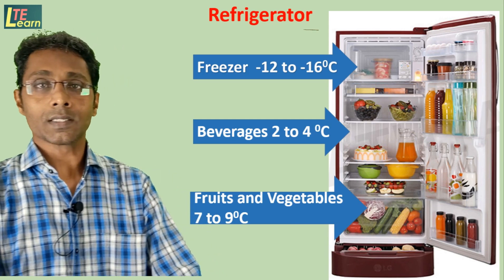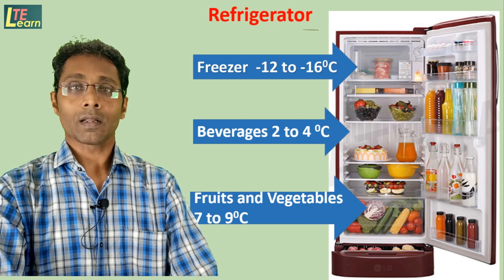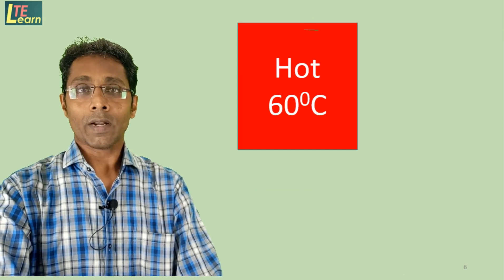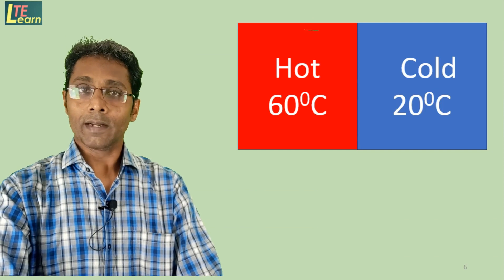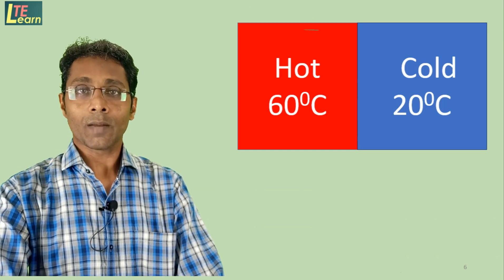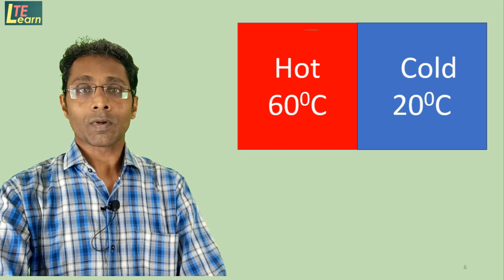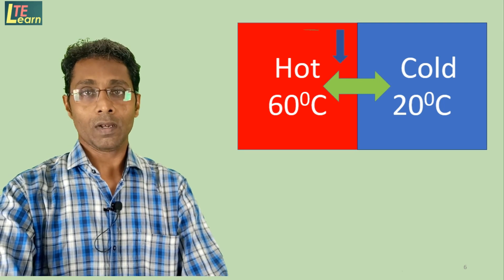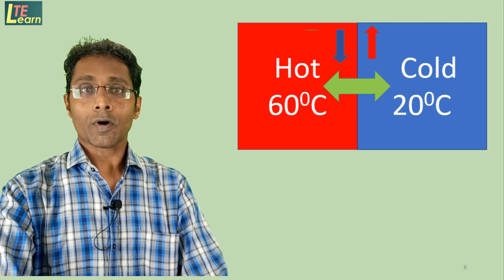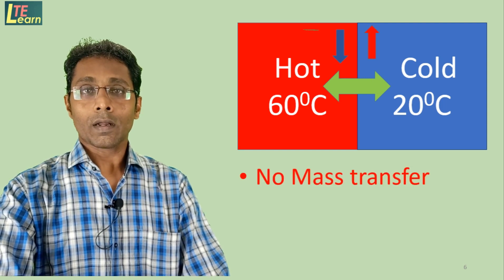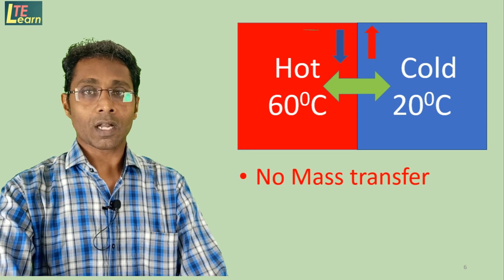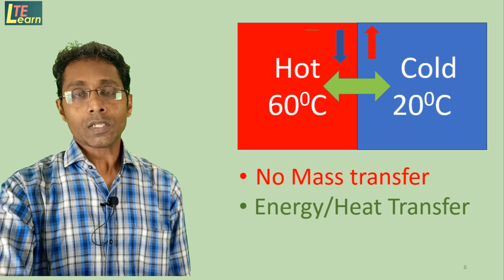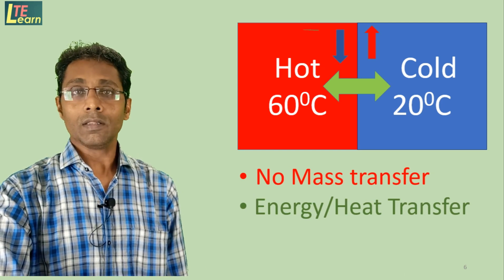Now the question is how these temperatures are maintained. Suppose one hot body and one cold body are kept side by side — then obviously heat transfer takes place between these two, from the hot body to the cold body. After some time the temperature of the hot body will fall and that of the cold body will rise. There is no mass transfer here, only heat transfer or energy transfer. Such a phenomenon is taking place in the refrigerator.